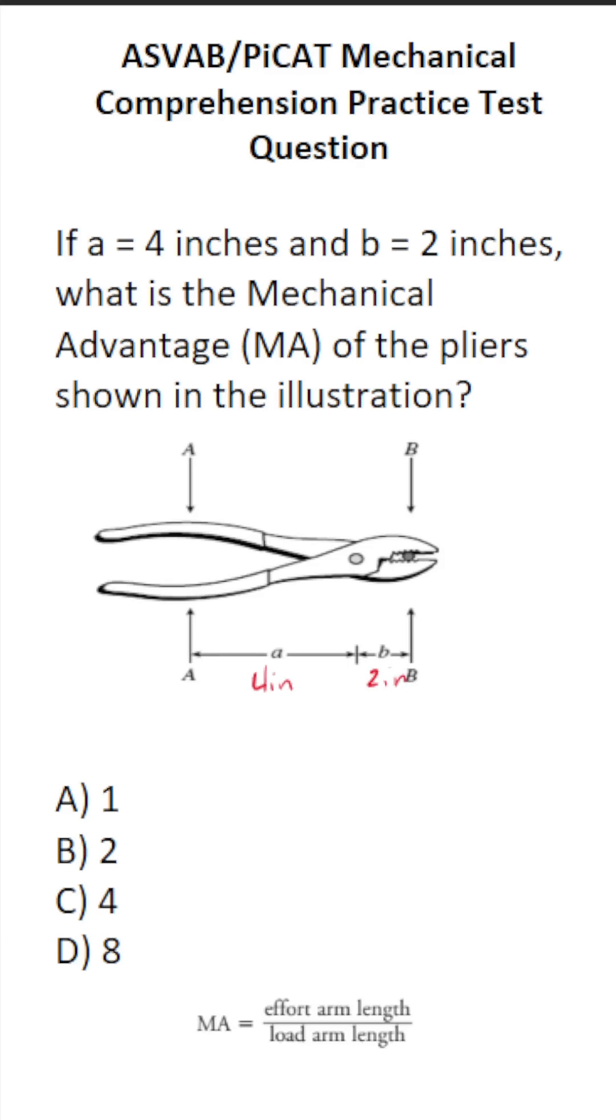Now, for the ASVAB and PyCat, you're not going to be given a reference sheet, so you have to know this formula right here. This one's not hard to memorize. In fact, you should be able to solve this one intuitively. But the mechanical advantage in this simple lever system is going to be the effort arm length divided by the load arm length.